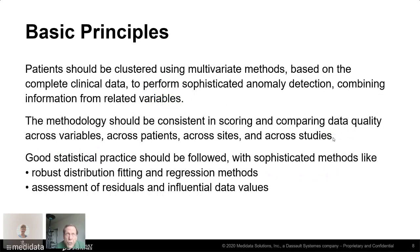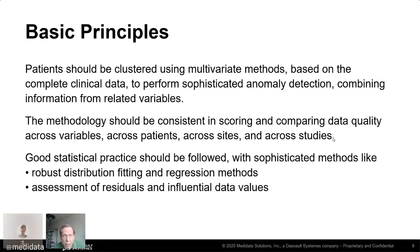Patients should be clustered using multivariate methods based on the complete clinical data, so that we can detect anomalies in a sophisticated way by combining information from several related variables. The methodology should be consistent in scoring and comparing data quality across variables, patients, clinical research sites, and across studies in a whole portfolio. We want to use the best statistical practice — methods like robust distribution fitting and regression, assessment of residuals, and influential data values.